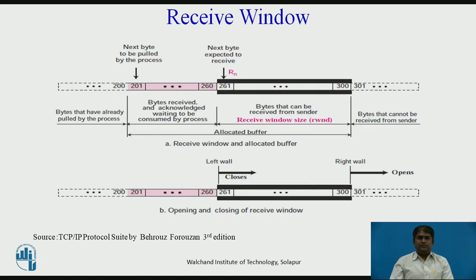Now, the receive window. The figure shows an example of a receive window of size 100 bytes; normally thousands of bytes. The figure also shows how the receive window opens and closes, but in practice the window should never shrink. The first difference is that TCP allows the receiving process to pull data at its own pace, meaning part of the allocated buffer at the receiver may be occupied by bytes that have been received and acknowledged but are waiting to be pulled by the receiving process. The receive window size is always smaller than or equal to the buffer size. The receiver window size determines the number of bytes that the receive window can accept from the sender before being overwhelmed. The second difference is the way acknowledgments are used in TCP.